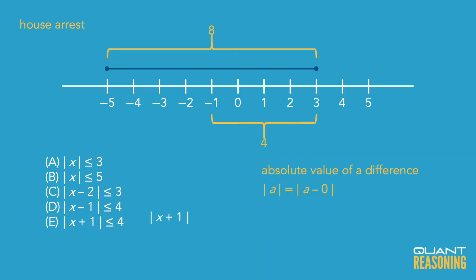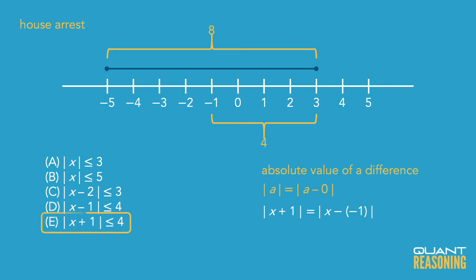Using that understanding and going back to answer choice e, we could think of that as the absolute value of x minus negative one, because x plus one is the same as x minus negative one. If you think of it that way, it's telling you that x is located up to four units away from negative one, which is an exact match to the shaded part. So answer choice e, the absolute value of x minus negative one is less than or equal to four, translates to: x is located up to four units away from negative one.